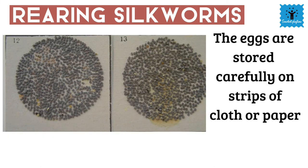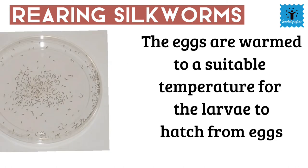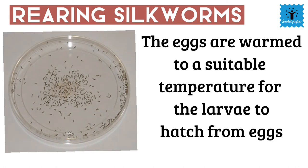The eggs are stored carefully on strips of paper or cloth and then sold to silkworm farmers. The silkworm farmers keep the eggs under very hygienic conditions and warm them to a suitable temperature so that the larvae can hatch.